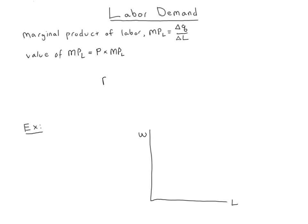So our key condition is P times MPL equals — and now we just have to think about what is the cost of hiring a worker for one hour. As the book tells you, the standard word for that is wage, so we'll just use W to denote that.